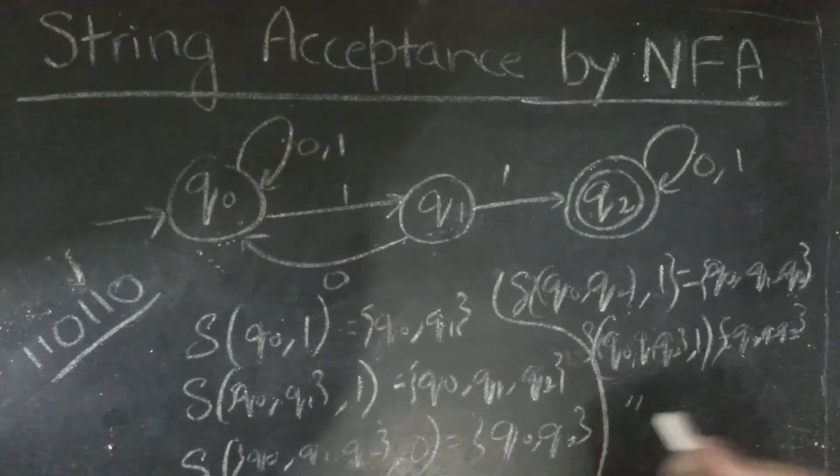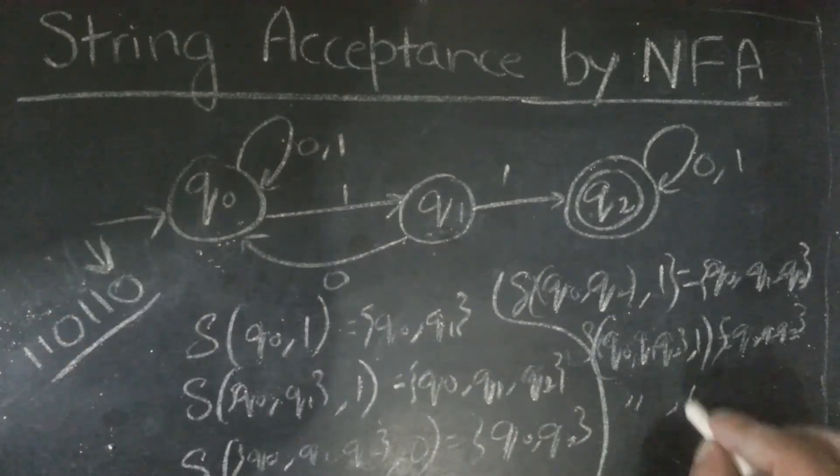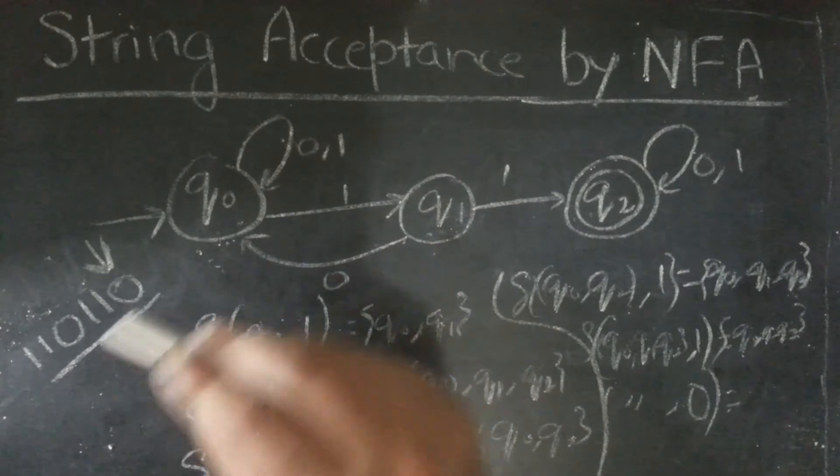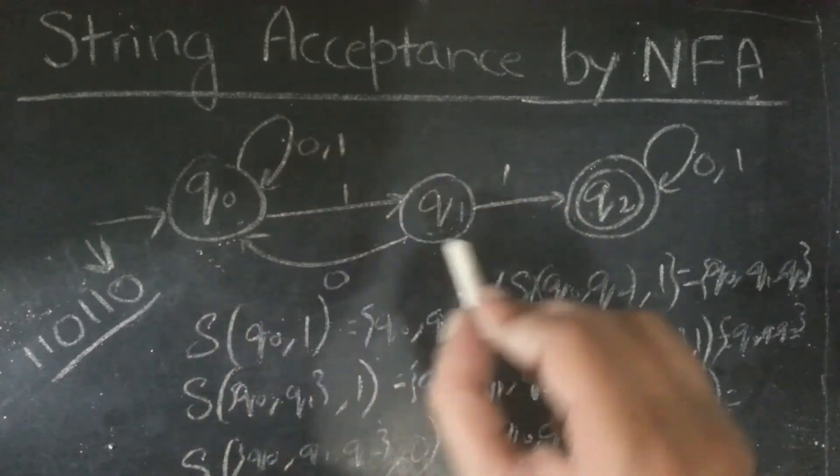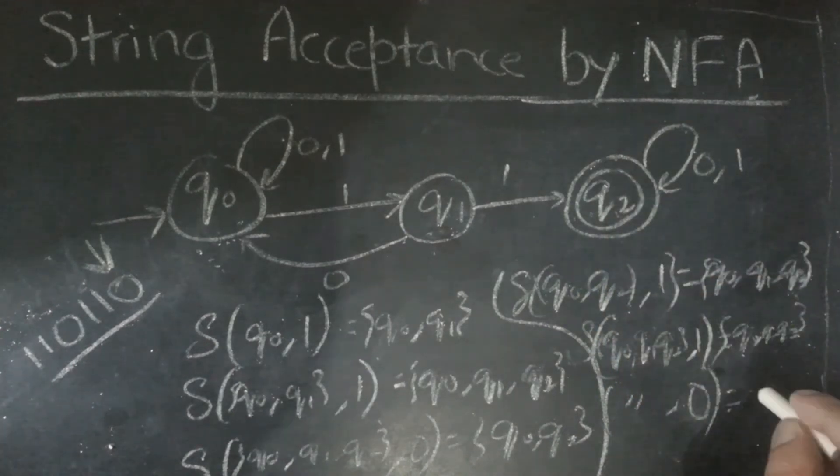Now, again on q0, q1, q2, we will give the final which is 0. So, q0, 0 will take us to q0, q1, 0 will take us to q0, q2, 0 will take us to q2. So, answer would be q0, q2.